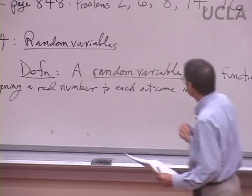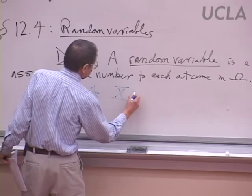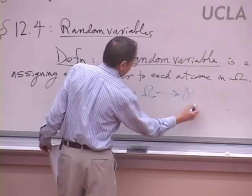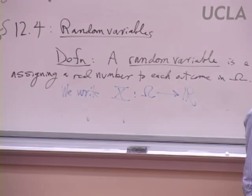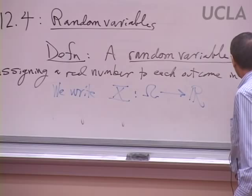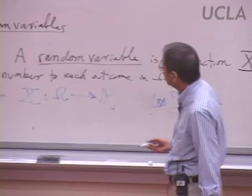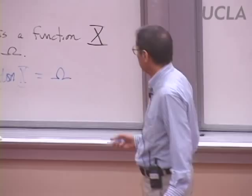In symbols, to say that it's a function from the sample space — it's often written with a colon and an arrow — means that its domain is the sample space. It's assigning numbers to things in the sample space, and its range is some subset of the real numbers.